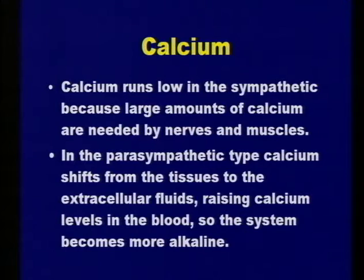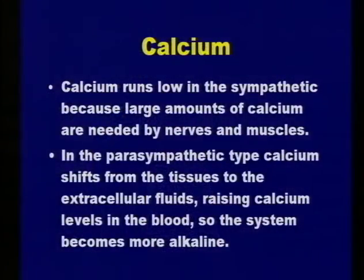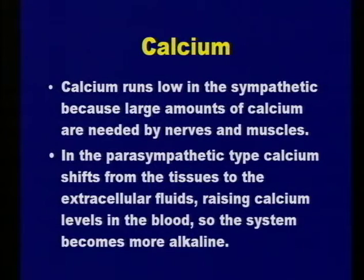The next test is calcium—calcium in the blood specifically, not tissue or bone density. When calcium runs low in the sympathetic, it's because large amounts are needed for nerves and muscles. The sympathetics go acid, and the body leaches calcium out of bone to help buffer the blood because nerves, tissues, and muscles require more calcium—like in the fight-or-flight response when muscles are geared up for action, pulling calcium in. So blood calcium level goes down. It has to get calcium from somewhere—either from bones, or you have to put calcium supplements in.